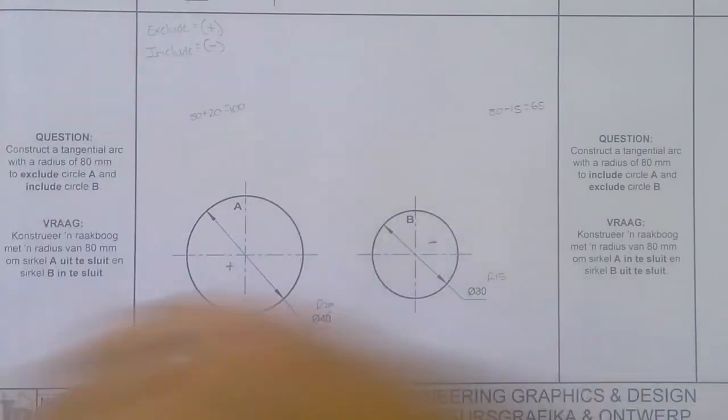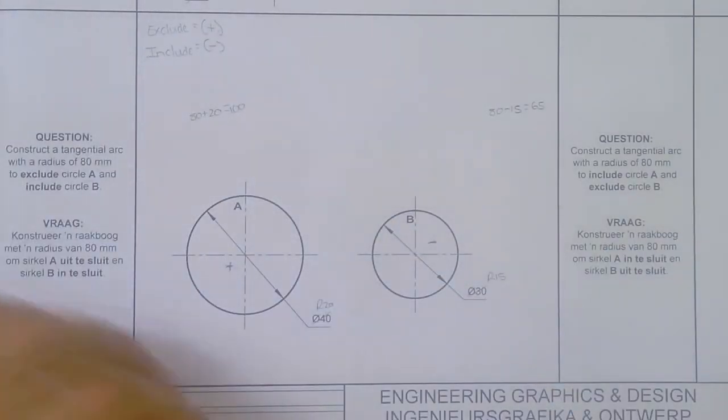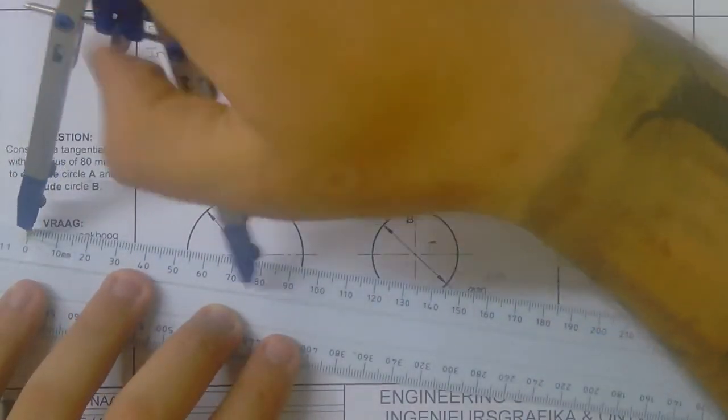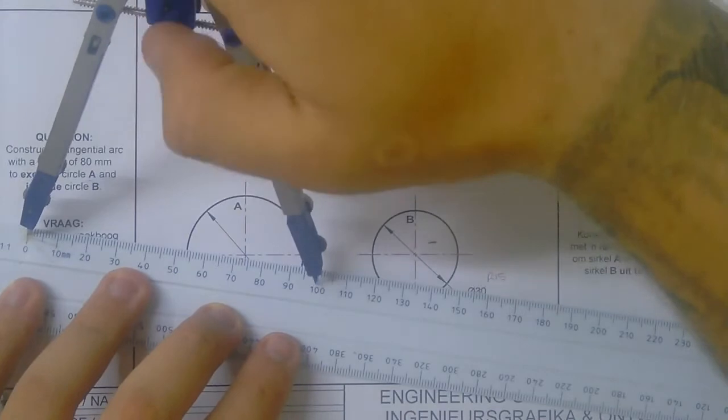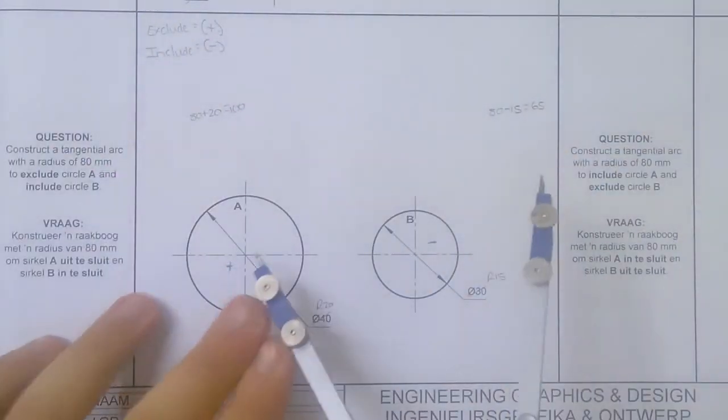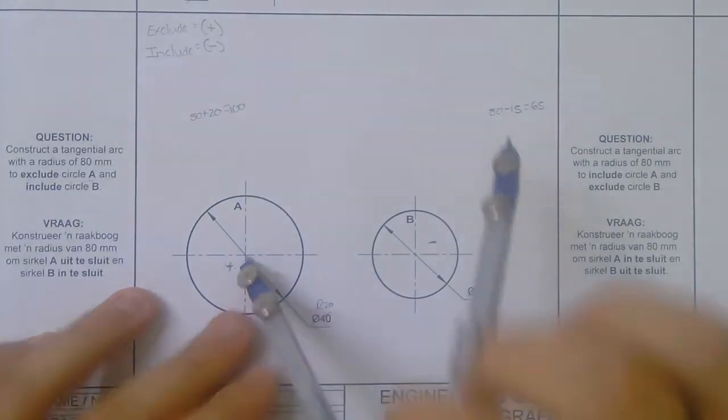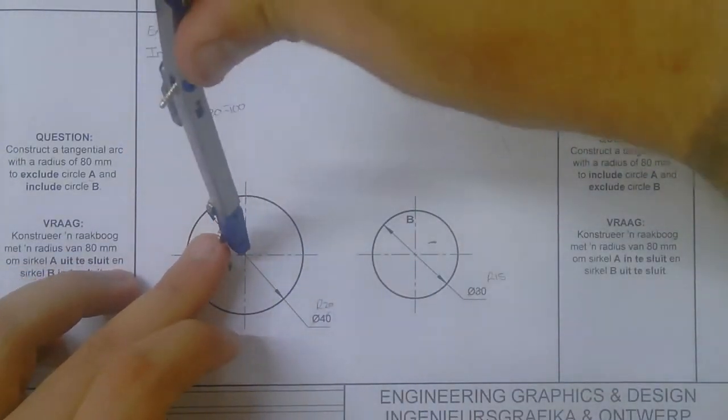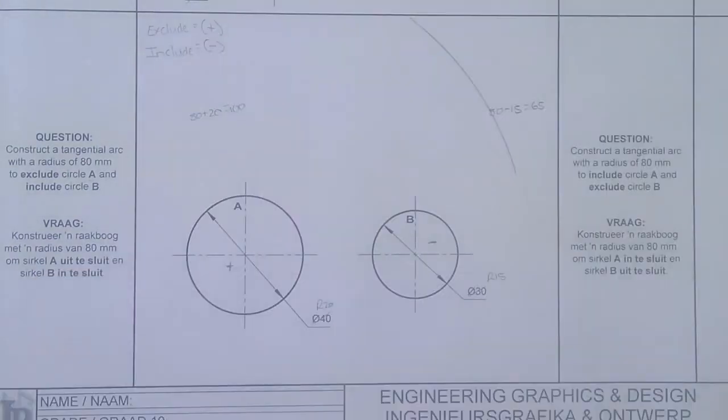Now, what do we do? We set our compass to first 100, setting our compass to 100, putting it on the exclude circle, and drawing our arc.